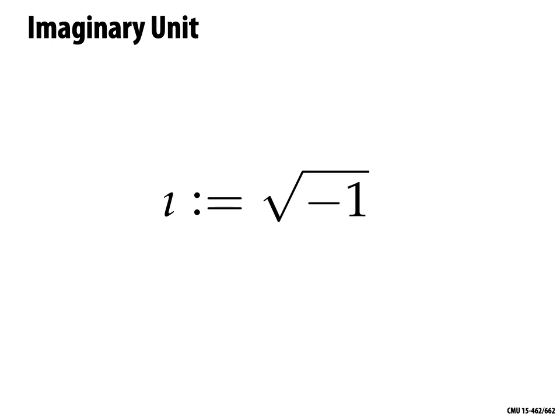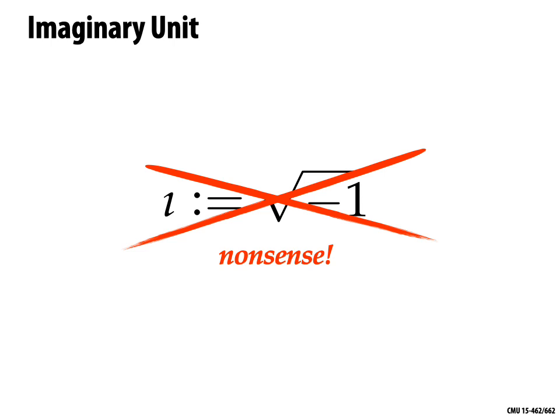The thing that really scares people away from complex numbers is that the first time they're introduced to them, they hear somebody say: 'Today we're going to talk about complex numbers — we're going to define i as the square root of negative one.' And at this point, most people's minds just go blank. What the heck could this possibly mean? I want you to completely forget this idea about i being the square root of negative one — it completely obscures the fact that the imaginary unit has a very simple and intuitive geometric meaning.